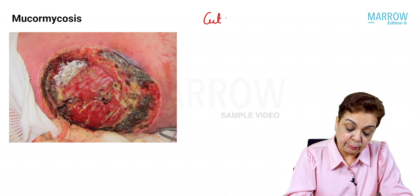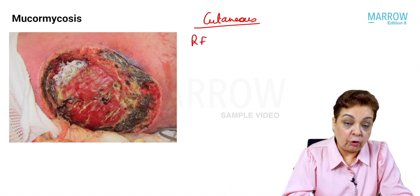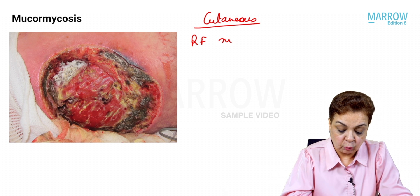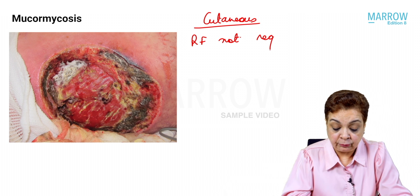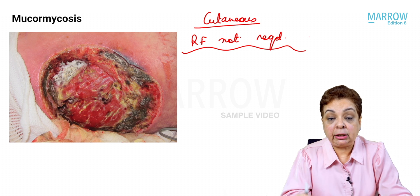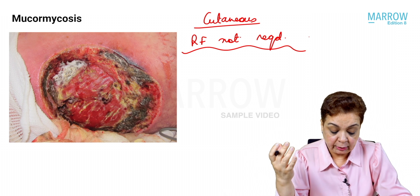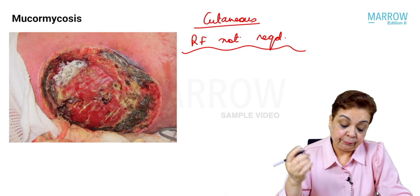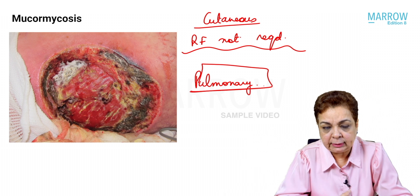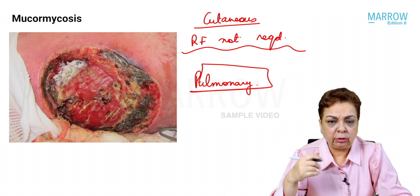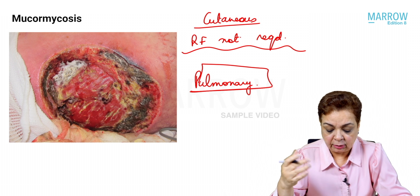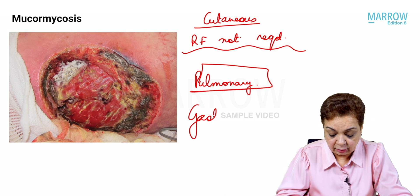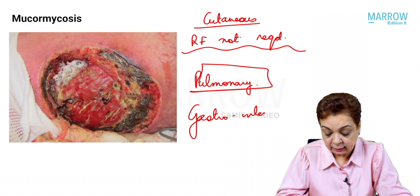Other types of mucormycosis include cutaneous mucormycosis (acquired via trauma, with the classic risk factors not required), pulmonary mucormycosis (acquired by inhalation, requires risk factors), gastrointestinal mucormycosis, and disseminated mucormycosis.